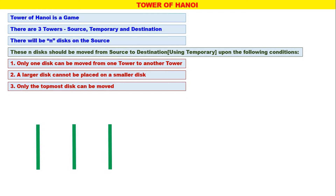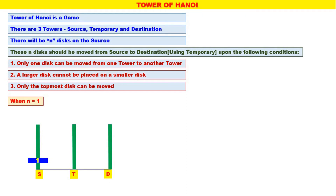Now let us consider the three towers: Source, Temporary, Destination. Initially we will consider n equal to 1, that is only one disk is there on the Source. This one disk should be moved from Source to Destination. Let us consider the only disk as disk number 1.